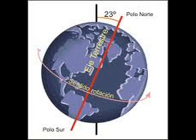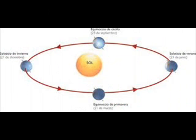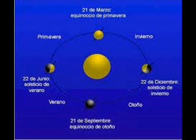From the spring equinox to the summer solstice, the length of the night gets smaller, with more and more hours of daylight. From the summer solstice, daylight hours are reduced, until the autumn equinox when hours of light and darkness are equal, and at the winter solstice the maximum hours of darkness are reached.